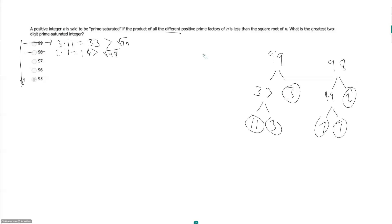What about 97? 97, I believe, is 97 prime? Sums to 16, so it's not divisible by 3. Is 97 divisible by 7? So I think 97 is prime. So that's definitely not prime saturated if it's prime, because 97 is certainly going to be greater than the square root of 97.